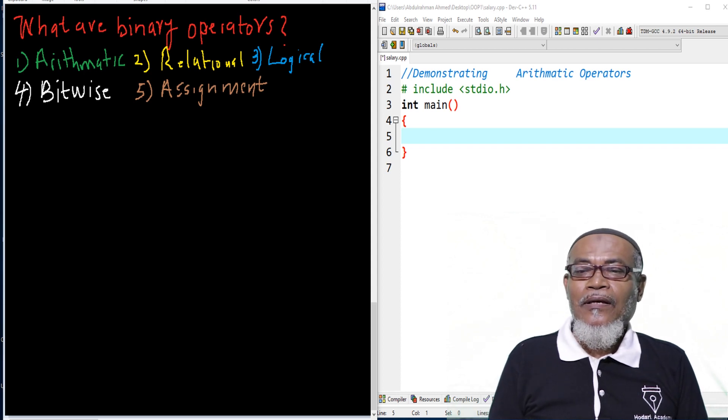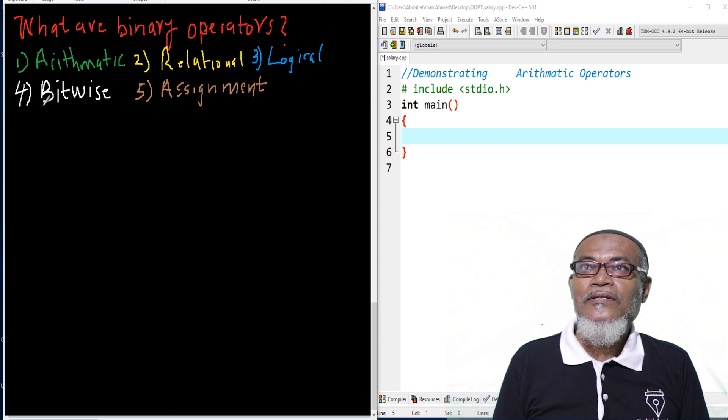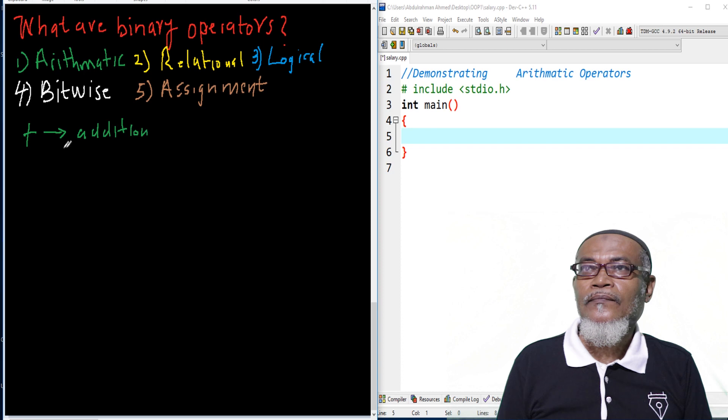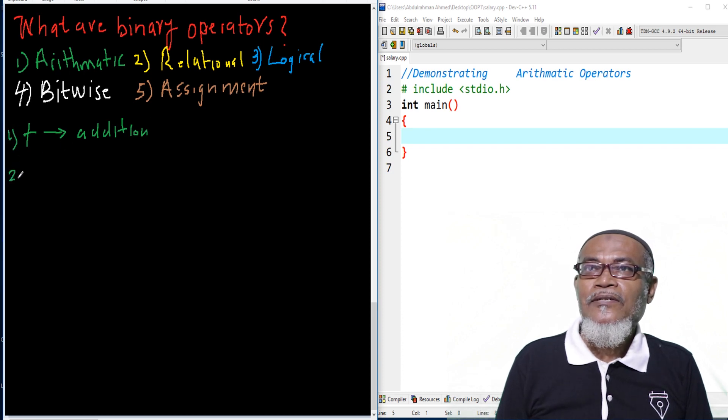Let's see what are the arithmetic operators. Basically, the arithmetic operators contain a symbol such as a plus, which means addition. We have got another symbol, the minus, which means subtraction. We have got another symbol, which is an asterisk. An asterisk represents multiplication.